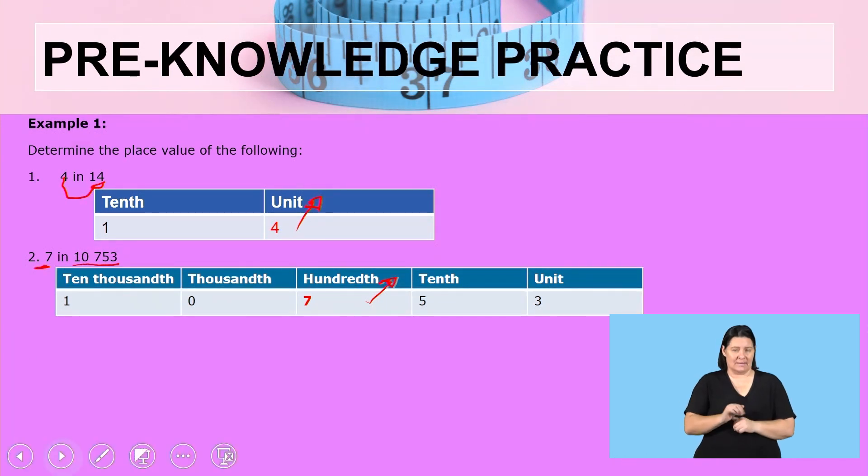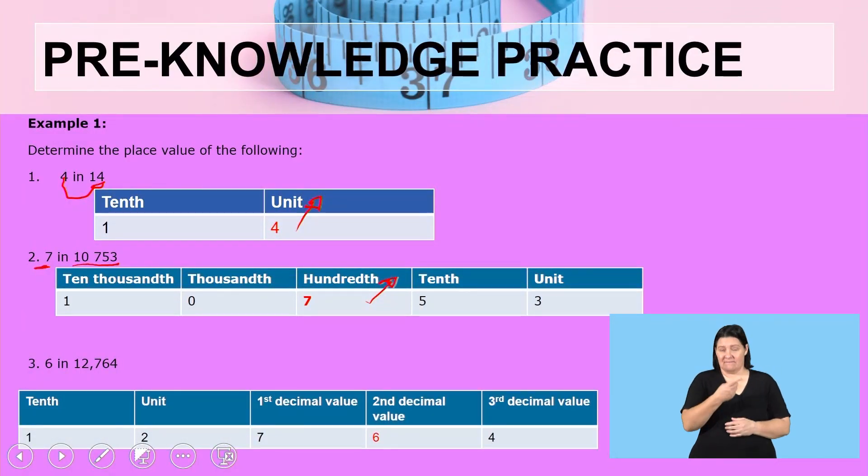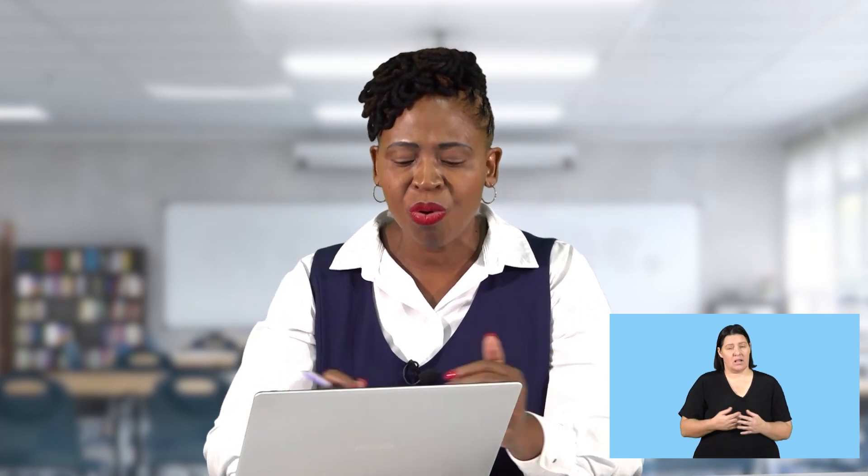Let us have a look at the last example. It will be 6 in 12,764. Now we have a different number, a number with decimals. When you have decimals, we're still looking at the digits. The digits we have in this number are five. So we are going to complete the table to write the digits.